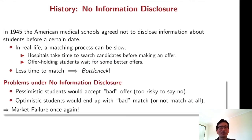So there are two problems. Under no-information disclosure, pessimistic students would accept bad offers because it's too risky to say no. And optimistic students would end up with bad match or not match at all after just waiting for a better offer. So we have market failure once again.